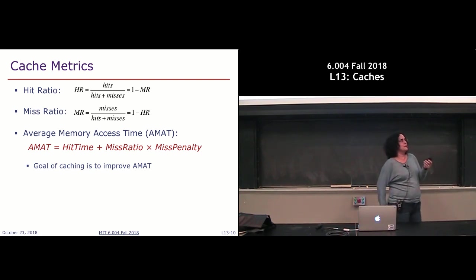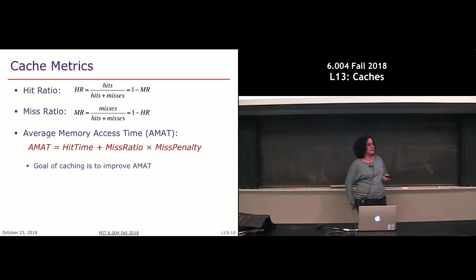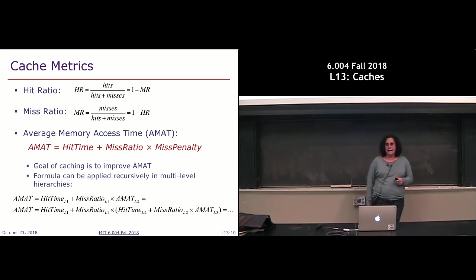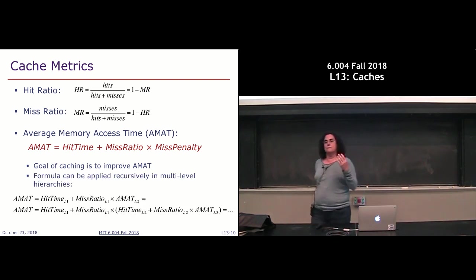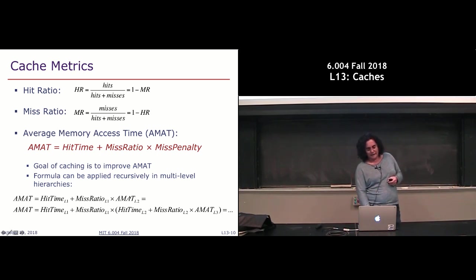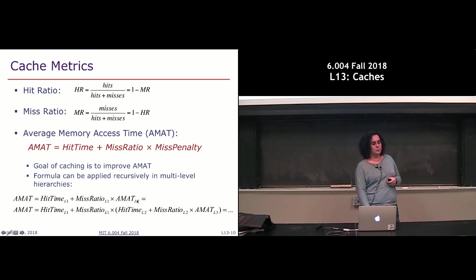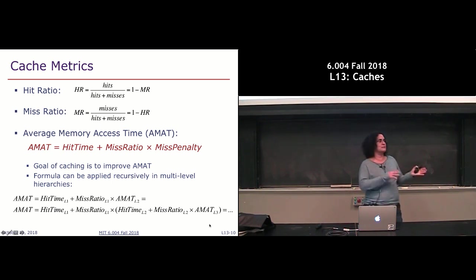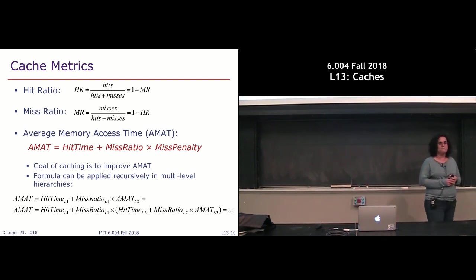Our goal is to minimize this average memory access time. Sometimes our memory model is more complicated than just a single-level cache. You can apply this equation recursively: if you have a level one cache, AMAT equals the hit time of L1 plus the miss ratio of L1 times the AMAT of L2, which in turn expands to include level three, and so on.